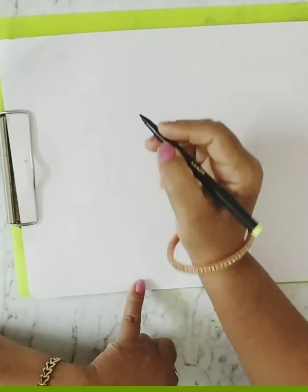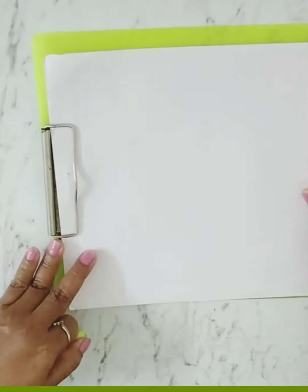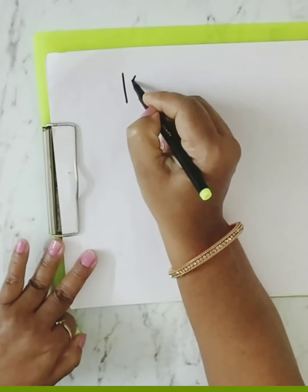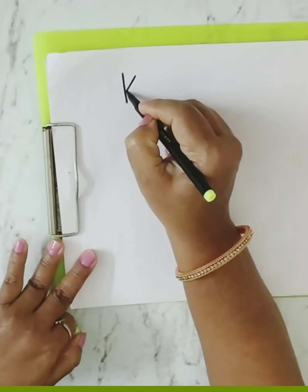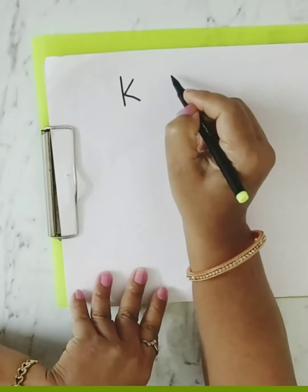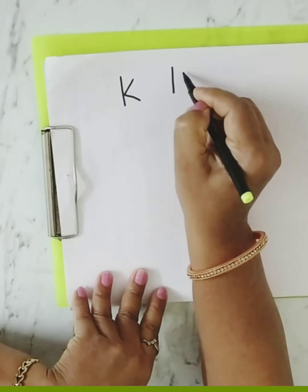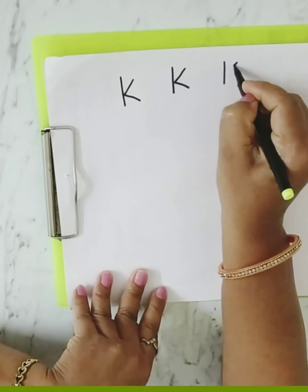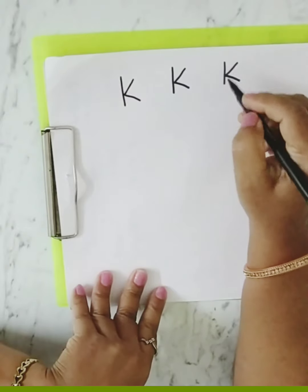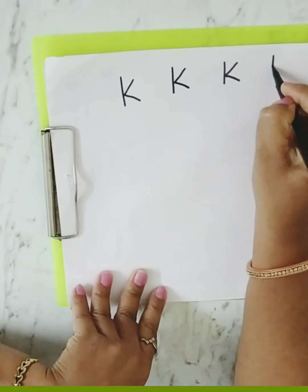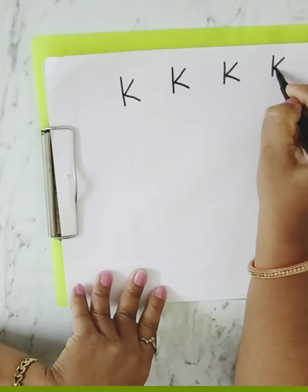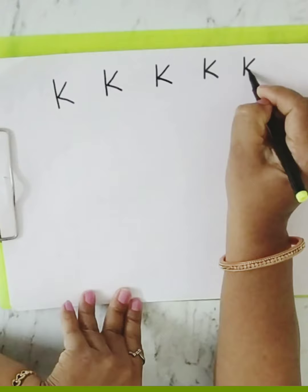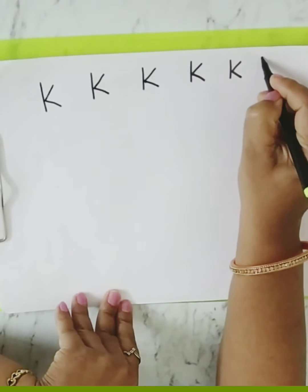Aise pattern mein aapko pehle — kya tha first? Yes — standing line. First mein standing line. Then one slanting line, aur yahin se join karke another slanting line, hai na. To yeh aise aapko practice karna hai. Pehle standing line, slanting line, one more slanting line join karke. Dekho yahan pe — standing line, slanting line, usi ko join karke doosri slanting line. So this is letter K.